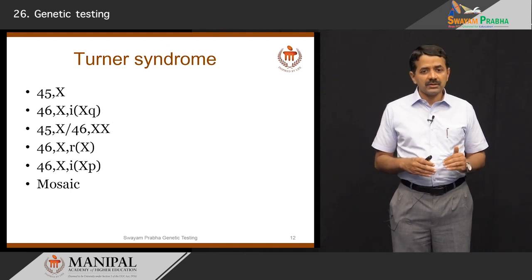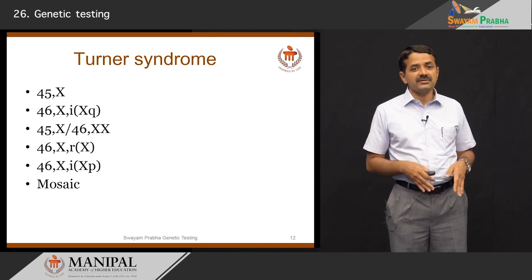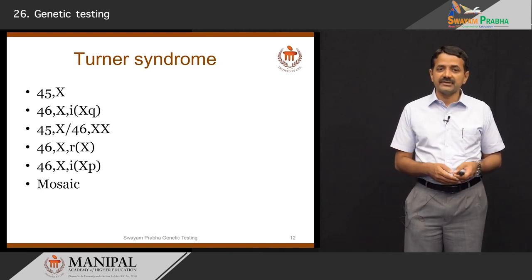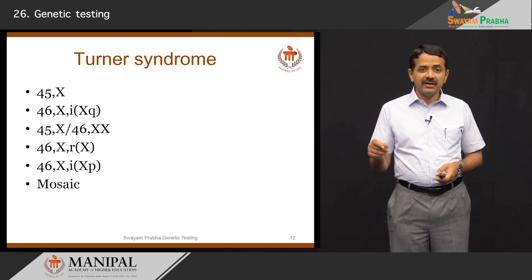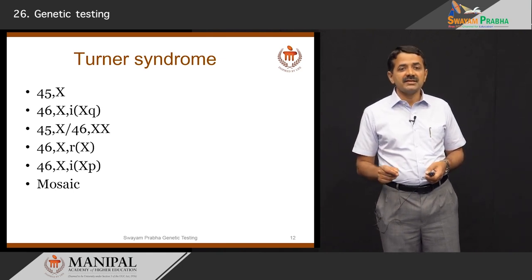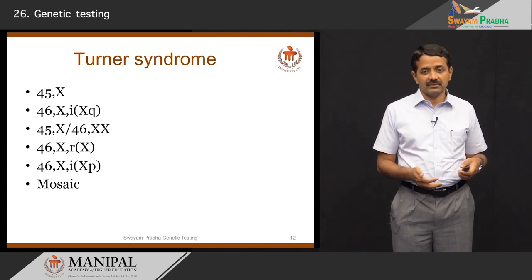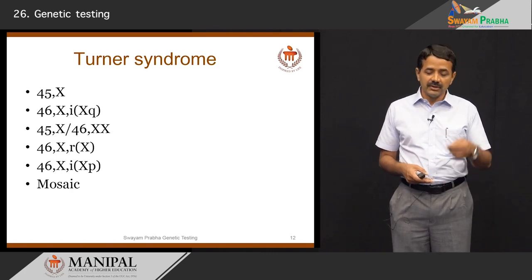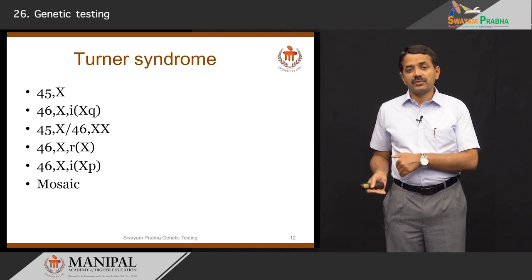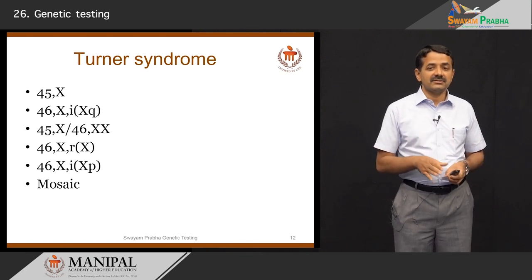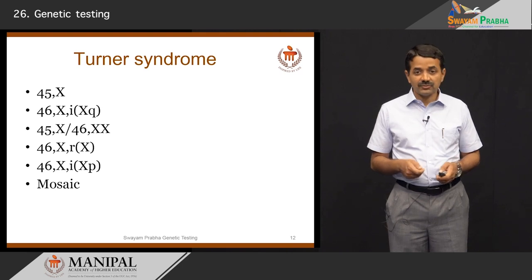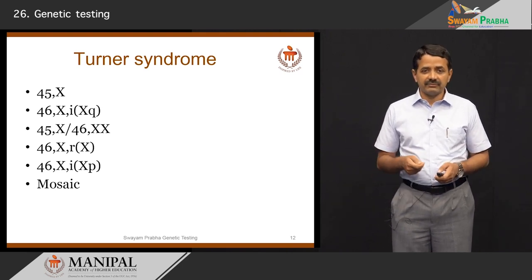It is important not only to know what test we are ordering, but also what we need to look for. If the clinical diagnosis is Turner syndrome, in 50% of individuals they have 45 chromosomes, but we need to look for isochromosomes for Xq, Xp, ring chromosomes, and mosaics. We need to count as many cells as possible — perhaps 100 cells — to detect mosaic Turner syndrome. It is important to provide clinical details so the laboratory scientist looks for the specific genetic defect causing the clinical condition.